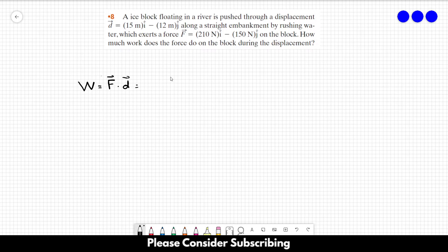Vector F equals 210 N in the i-direction minus 150 N in the j-direction, dot product with the displacement, which is 15 meters in the i-direction minus 12 meters in the j-direction.